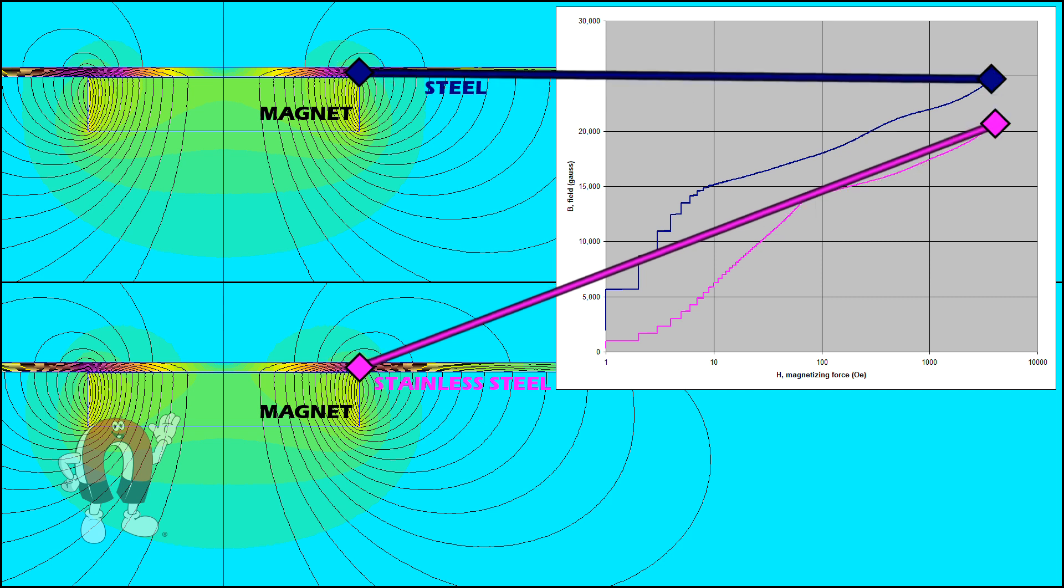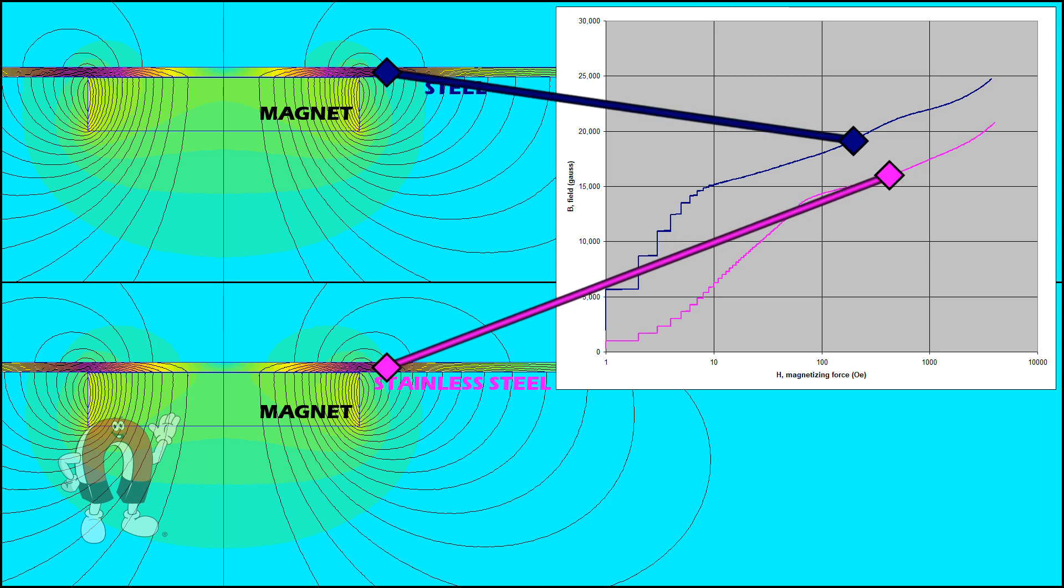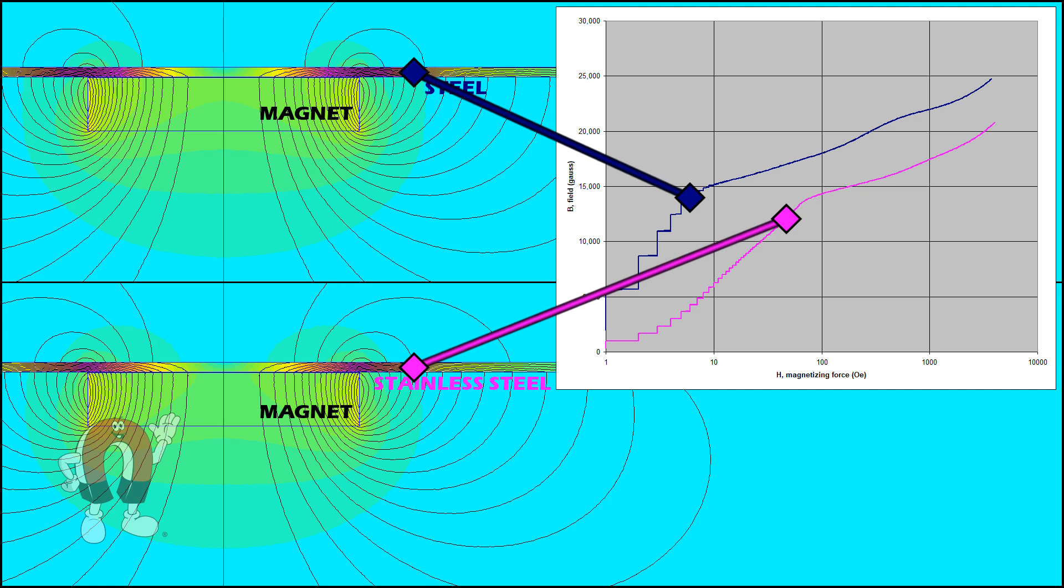At the edge, this thin steel is definitely saturated. As you move farther away from the magnet, it drops back down.